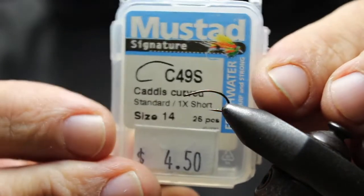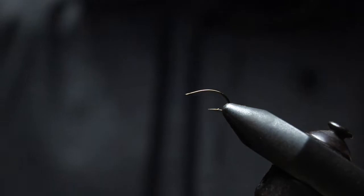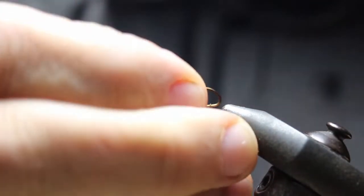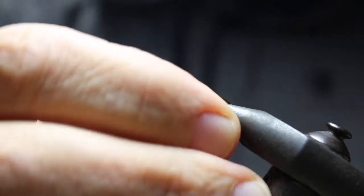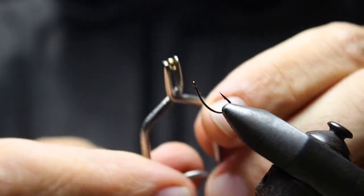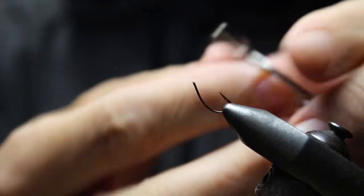C49s size 14, just kind of a curved caddis hook. To start with I'm going to switch around and put the bead in. I've got the bead right here and my hackle pliers.